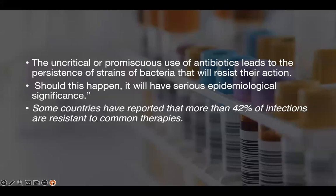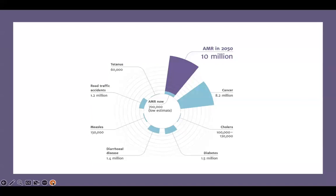The uncritical and promiscuous use of antibiotics leads to the persistence of strains of bacteria that resist their action. Should this happen, it will have serious epidemiological significance. Some countries are already reporting that about 42% of infections are resistant to common therapies. If this antimicrobial resistance continues to increase, it has been estimated that by 2050, infections resistant to drugs will be the number one cause of death globally, with 10 million people dying every year.